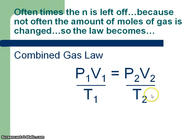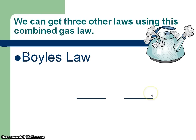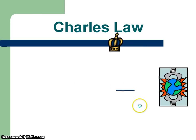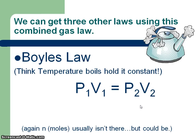Here's how we can get some other laws. "Boyle's" is like boiling water — you're holding temperature constant. So we take the combined gas law, hold temperature constant, which means we can get rid of the temperature, and this gives us Boyle's law. These laws were actually discovered individually first, then the combined gas law was found, then PV=nRT — but it's easier to remember it the other way.